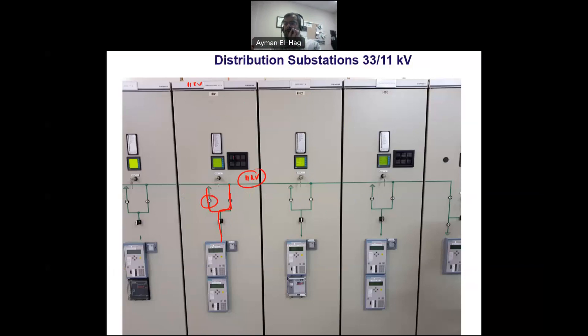The 11 kilovolt side is using, in that specific substation, a vacuum circuit breaker. The insulating medium is a GIS system. It doesn't show here; it's in the back of this panel. But the GIS system is not filled with gases. It is a vacuum. Usually, 11 kilovolt, 13.8 kilovolt use vacuum. 33 kilovolt and above, you need more insulation, so we use the SF6.